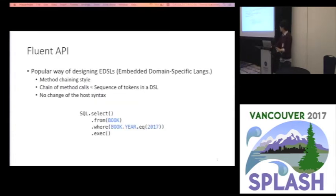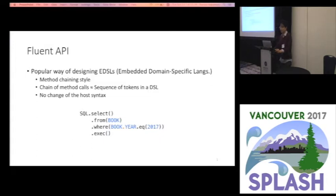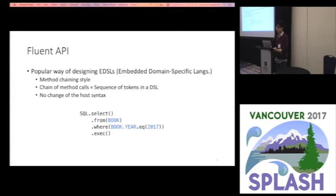First of all, let me introduce Fluent API briefly. Fluent API is a popular way of designing embedded domain-specific languages that is used in method-chaining style. Method-chaining style is a coding style that joins consecutive method calls together like a chain. By method-chaining, a sentence of a DSL is emulated on the host language without any change of the host syntax. Programmers can read a composed chain from left to right as if reading an original sentence of a DSL.